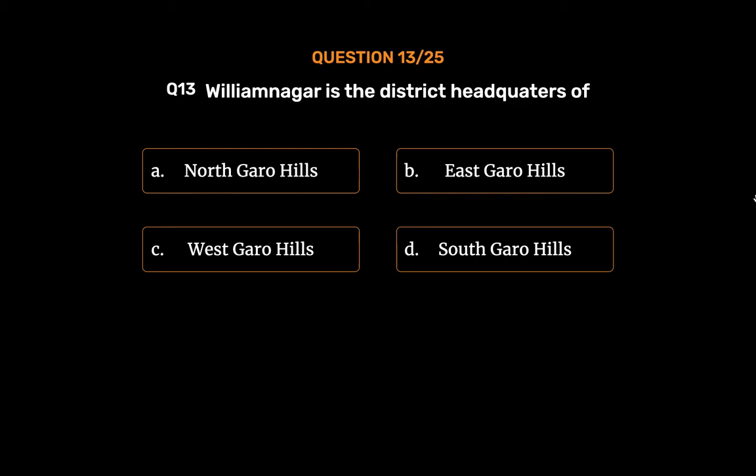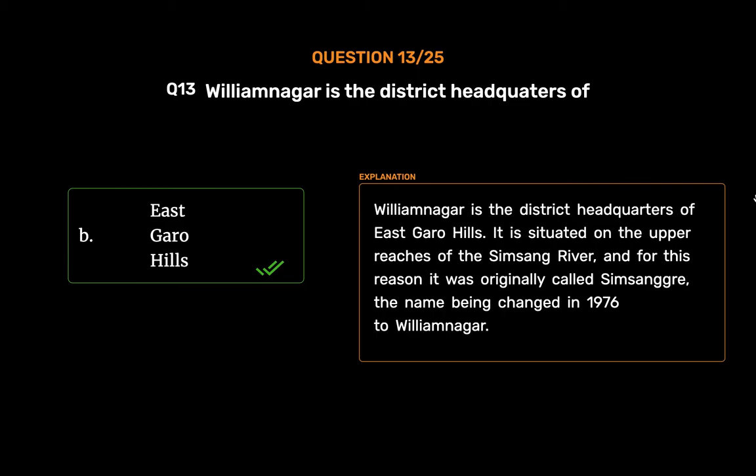The correct answer is Option B: East Garo Hills. William Nagar is the district headquarters of East Garo Hills. It is situated on the upper reaches of the Simsang River, and for this reason it was originally called Simsang Ray, the name being changed in 1976 to William Nagar.